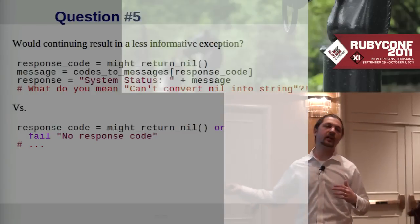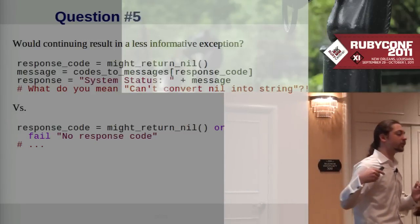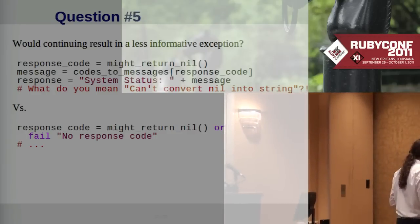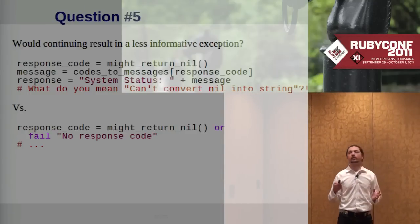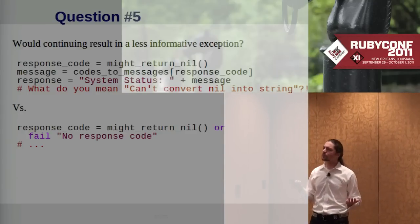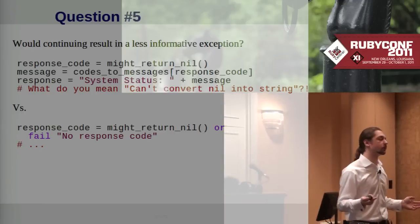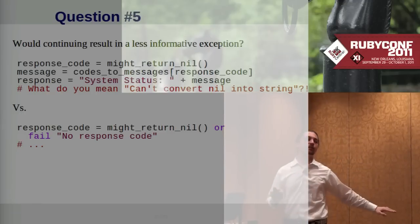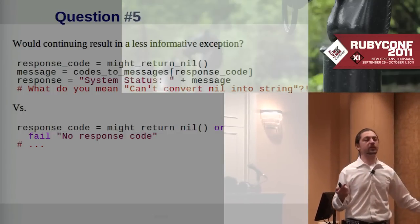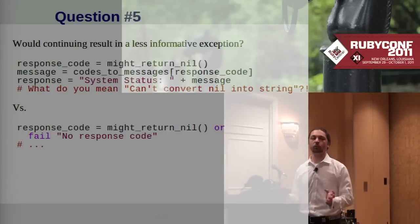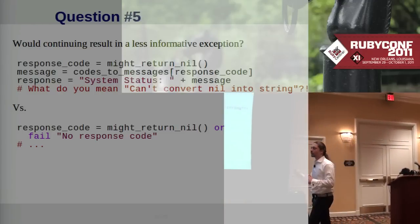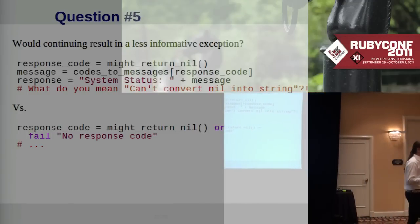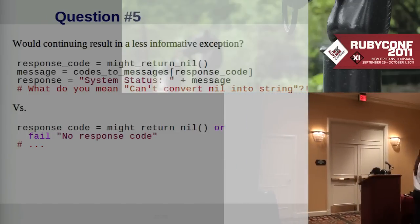Finally, would continuing forward result in a less informative exception? Sometimes, particularly when you have input to a method, certain values are simply unacceptable — like a nil value for an argument. If you let it proceed further down into that method, it might raise an exception which is pretty inscrutable. But if you raise an exception right at the top with a guard clause, you can be a lot friendlier to the caller. So that's a case for failing early.